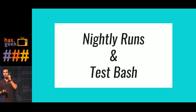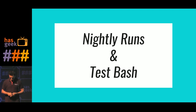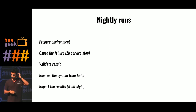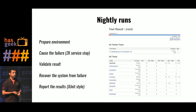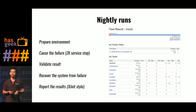There are two essential modes in which Goblin runs. One is called nightly run mode — think of it as an overnight regression suite that's running resiliency tests for you. Goblin gives you the ability to prepare the environment the way you would like to, then goes and causes some failure — for example, stop my Zookeeper service. It allows you to hook in your own methods to validate the result; in our case, that would be did any participants drop from the meeting, did any participants lose video, etc. Then it recovers the system from failure and reports the results in a JUnit style. The picture shows a Jenkins job that's finished, with reports on the failed tests and the passed tests.